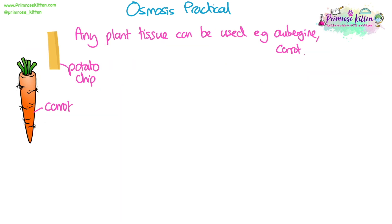Something I should mention, because people often get confused by this, is that when we say plant tissue, any plant tissue can be used. I've done this experiment with aubergine, I've seen it done with carrot, and we're going to use an example today that uses potato — which might be what you've used in school. You can also use bits of red pepper, for example. So as long as it's a piece of tissue made of plant cells, that's all that matters.